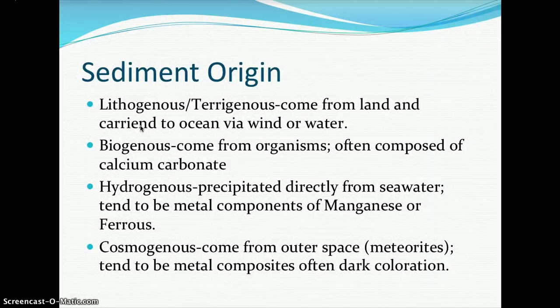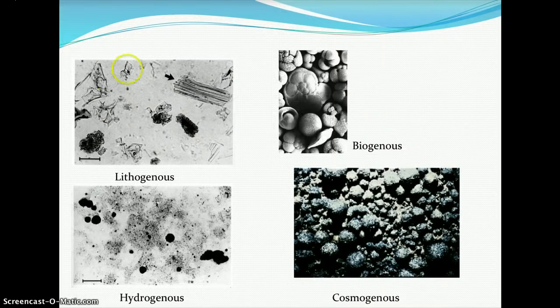There are four types of marine sediment based on origin. Lithogenous (or terrigenous) sediment comes from land and is carried to the ocean via wind or water. Biogenous sediment comes from organisms and is composed of calcium carbonate such as shells or hard casings. Hydrogenous sediment is precipitated directly from seawater and tends to be metal components like manganese or iron. Cosmogenous sediment comes from outer space, such as meteorites, and tends to be metal composites, often darker in coloration. Here you can see what typical lithogenous sediments look like.